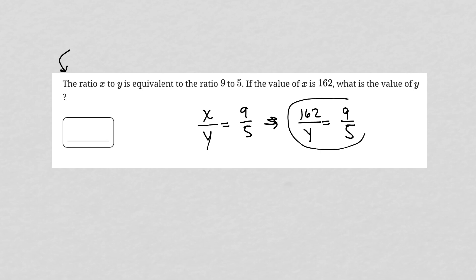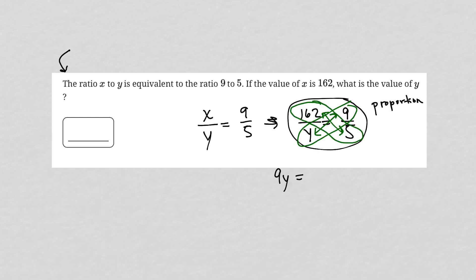At this point, we have what's called a proportion, and to solve a proportion, we cross-multiply. So if I were to cross-multiply here and here, I'd have 9 times y, which is equal to 9y, and I'd have 162 times 5.